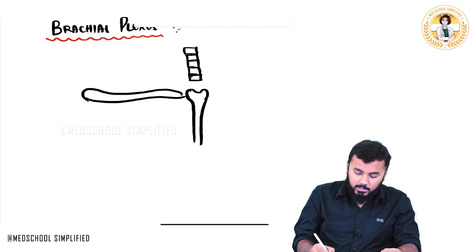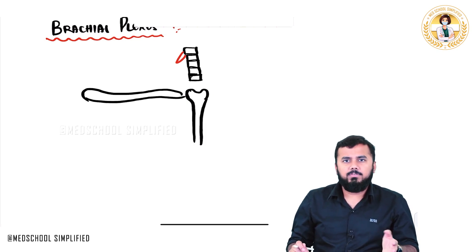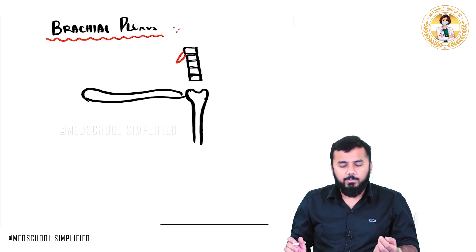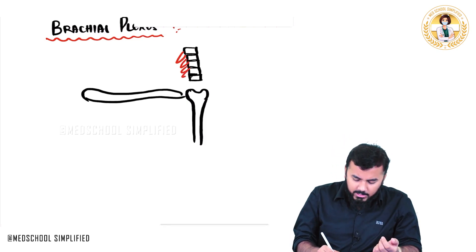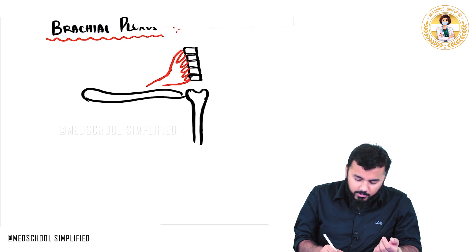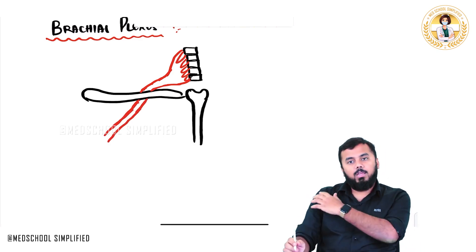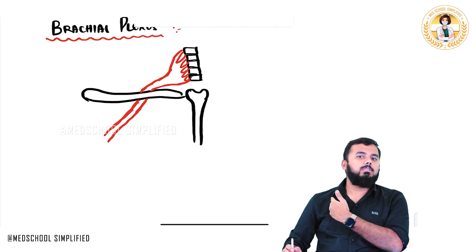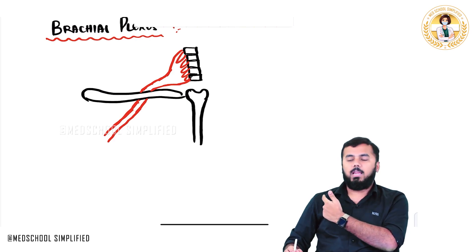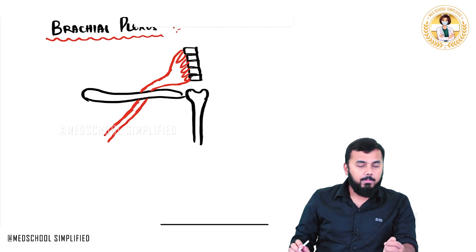Actually, brachial plexus is of three parts. These are your spinal cord segments: C5, C6, C7, C8, and T1. From the roots of those spinal cord segments, a group of nerves runs down, crosses the clavicle, comes down, and enters into your arm — passing below the clavicle. This is what is called as your brachial plexus.